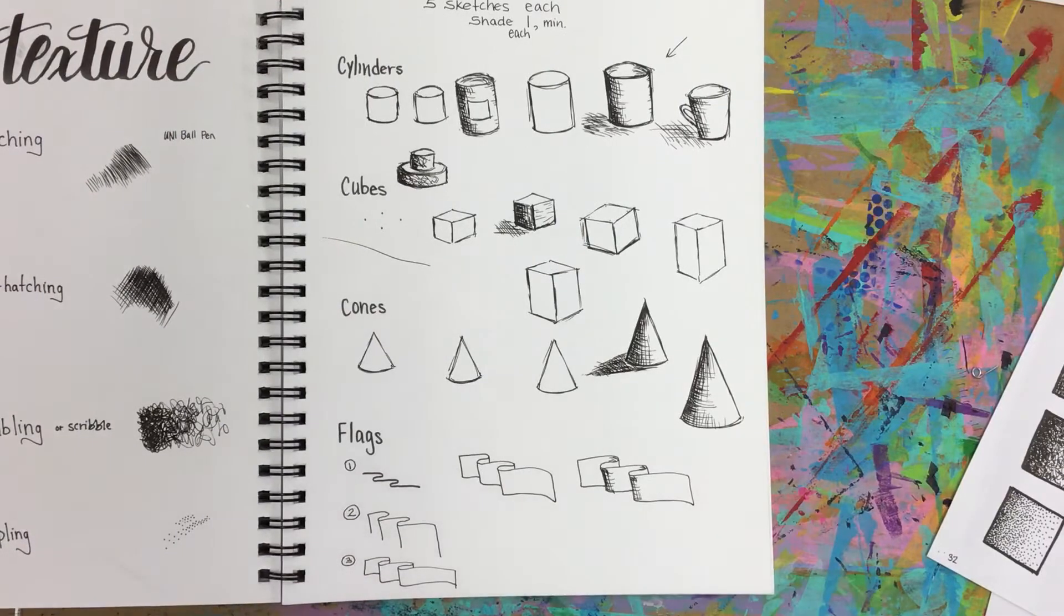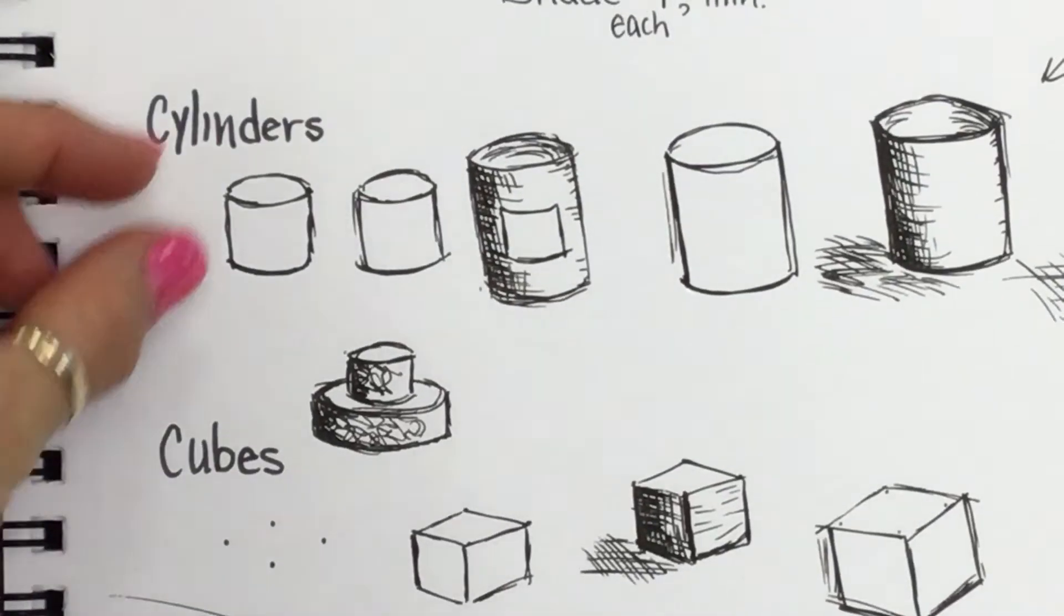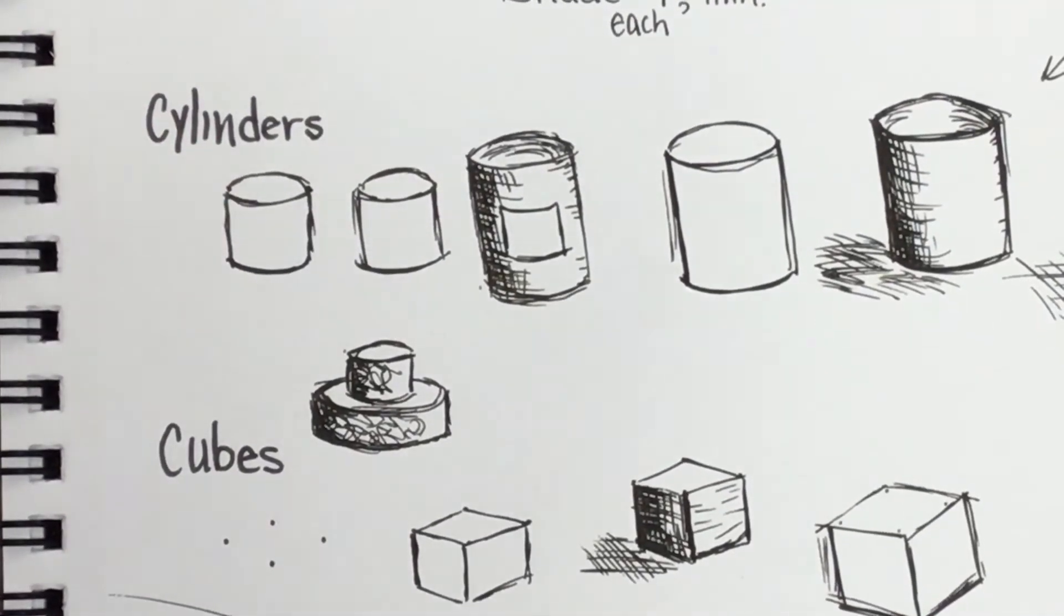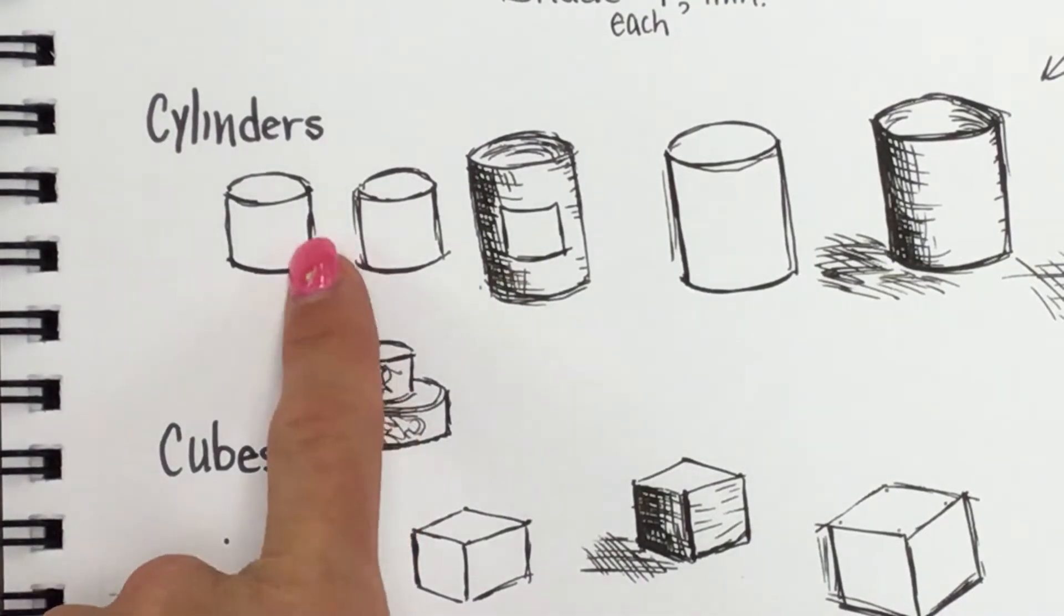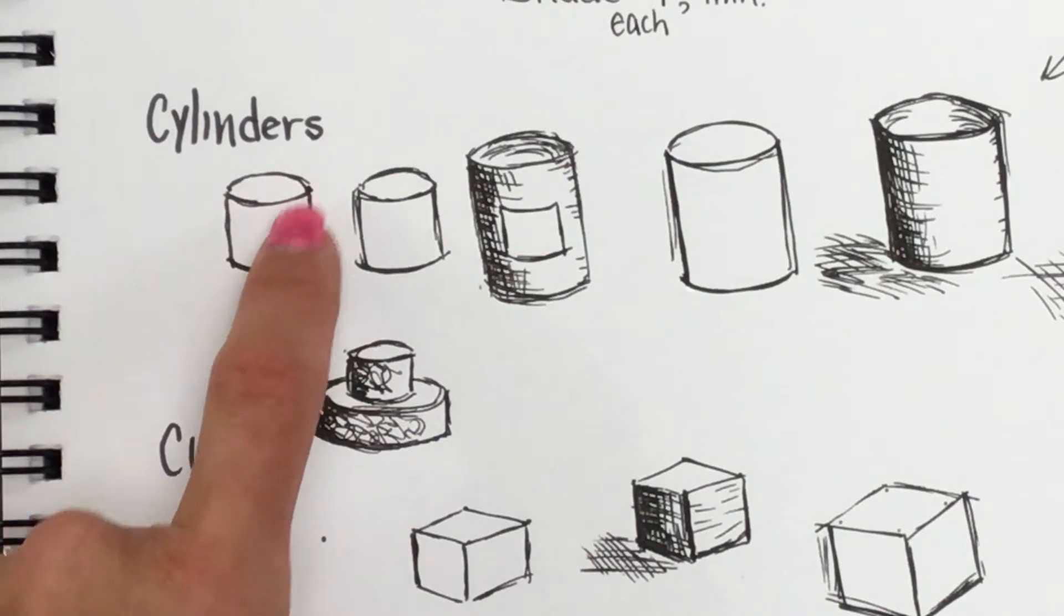We started with cylinders. Thing to remember with cylinders is it's going to be a squished oval or football shape and the lines to the side are parallel. So I have a bottom curve here, this curve and this curve will be the same, and then you have your top curve.